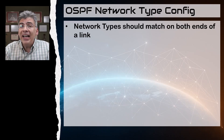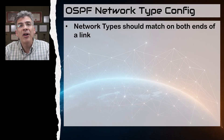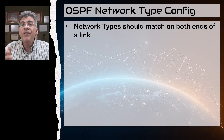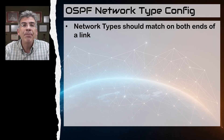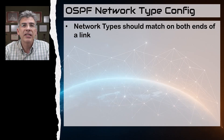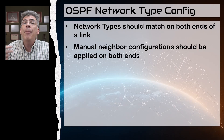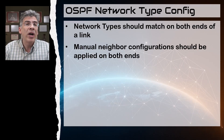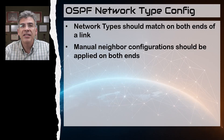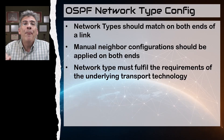Just some things to remember about OSPF network types: the network type configuration should match on both ends of the link. You may find that OSPF still works with different network types on each end, but it's always best practice to keep the configuration consistent and configure the same network type on both ends. The same goes for manual OSPF neighbor configurations — a neighbor may come up if configured manually only on one end, but you should apply it on both OSPF routers for consistency.